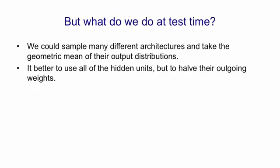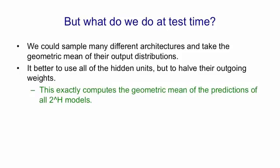We use all of the hidden units, but we halve their outgoing weights so they have the same expected effect as they did when we were sampling. It turns out that using all of the hidden units with half their outgoing weights exactly computes the geometric mean of the predictions that all 2 to the H models would have used, provided we're using a softmax output group.